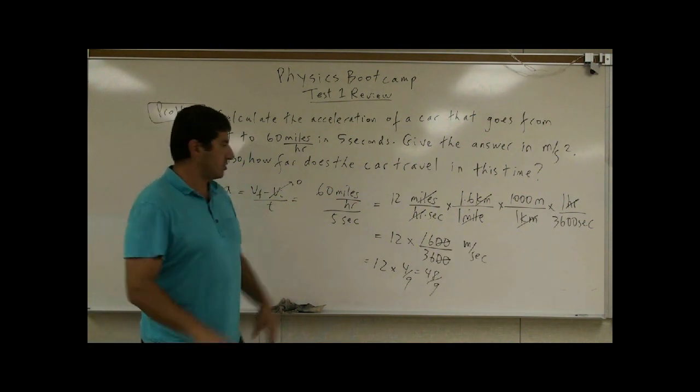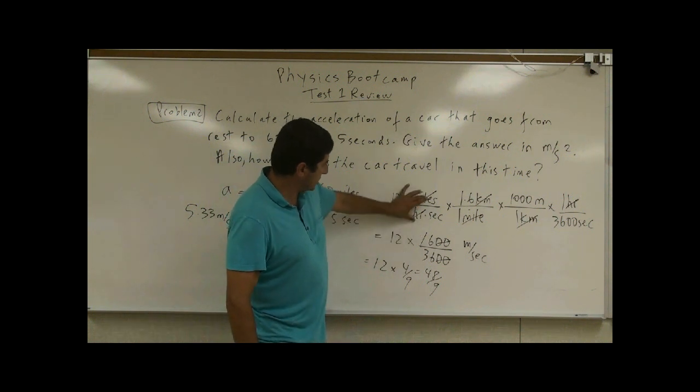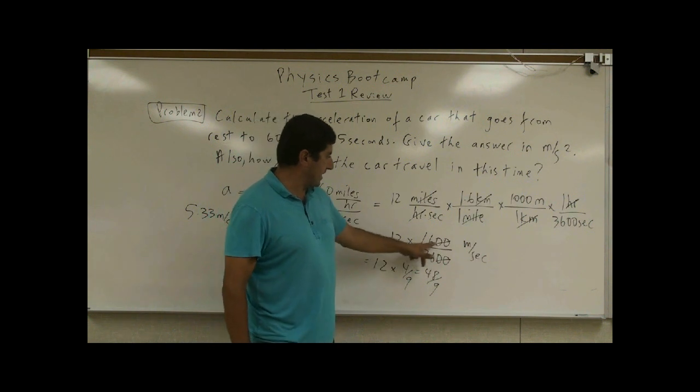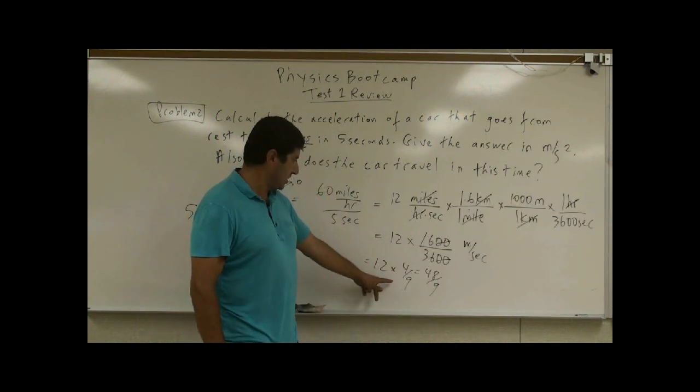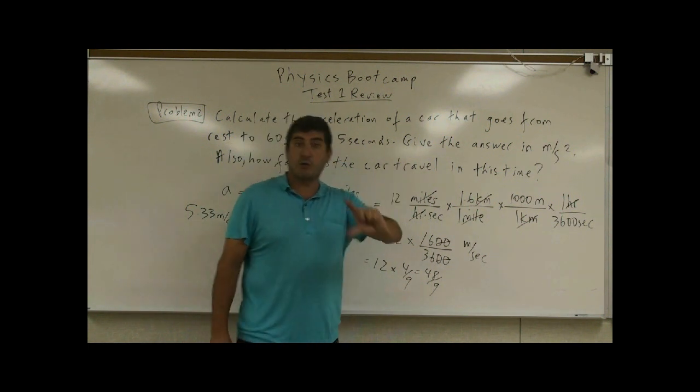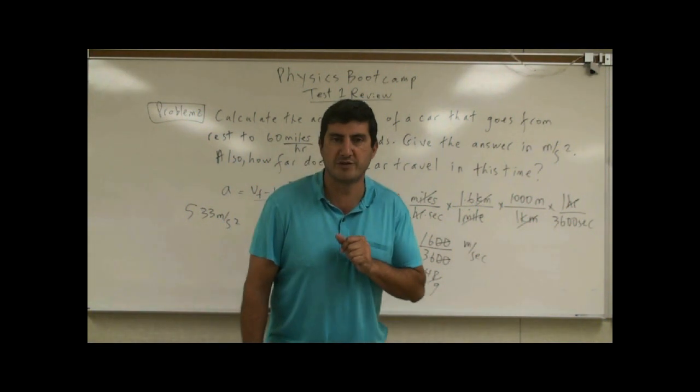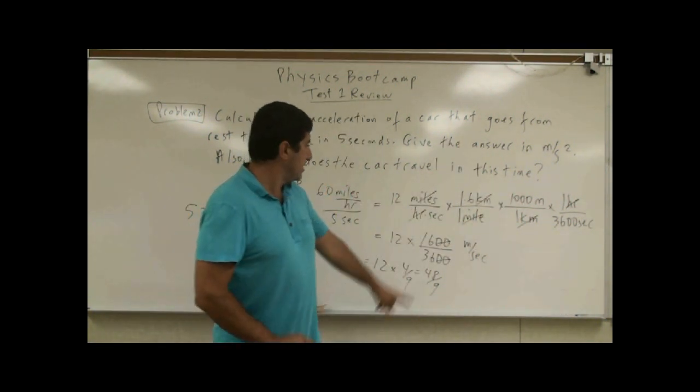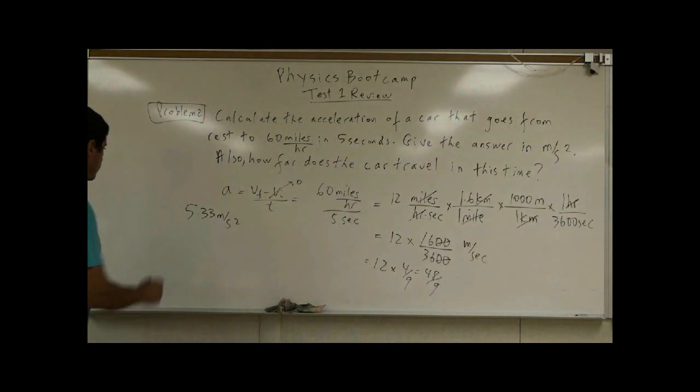So now you know, in general, when you want to go from mile per hour to meter per second, you multiply it by a ratio of four over nine. And then it changes your mile per hour to a meter per second. And then since you have an extra second here, it makes it a second squared. So the acceleration is 5.33 meters per second squared.